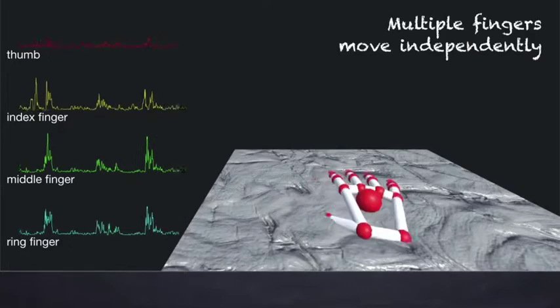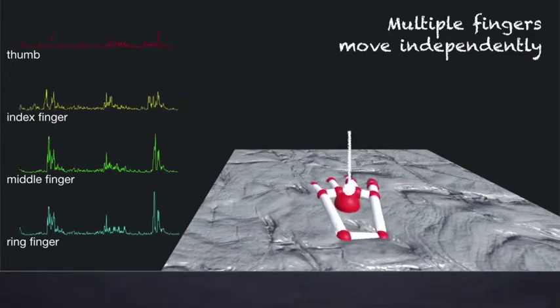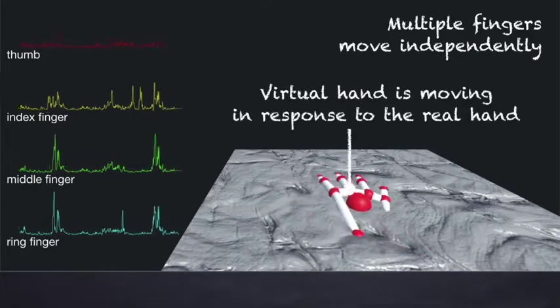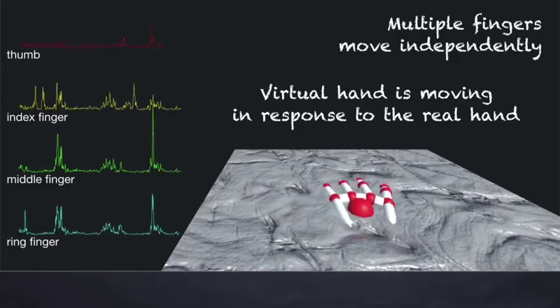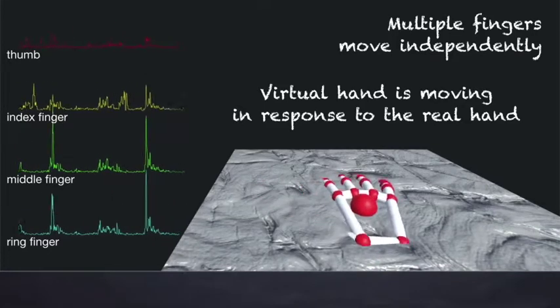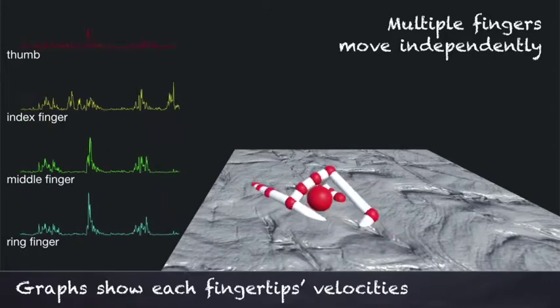This video shows one of the examples of multi-finger movement. The virtual hand shown here moves in tandem with the real hand motion. The left graphs show each fingertip's velocity when it is touching a virtual object.